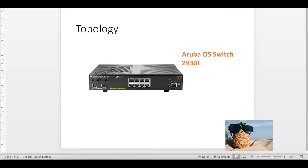This is roughly the topology we are using: a 2930F 8-port switch that we're going to connect with port 1 to the network. It will then find the Aruba Central instance and we'll make sure it can connect to that instance so we can start using it and adding it to template groups.